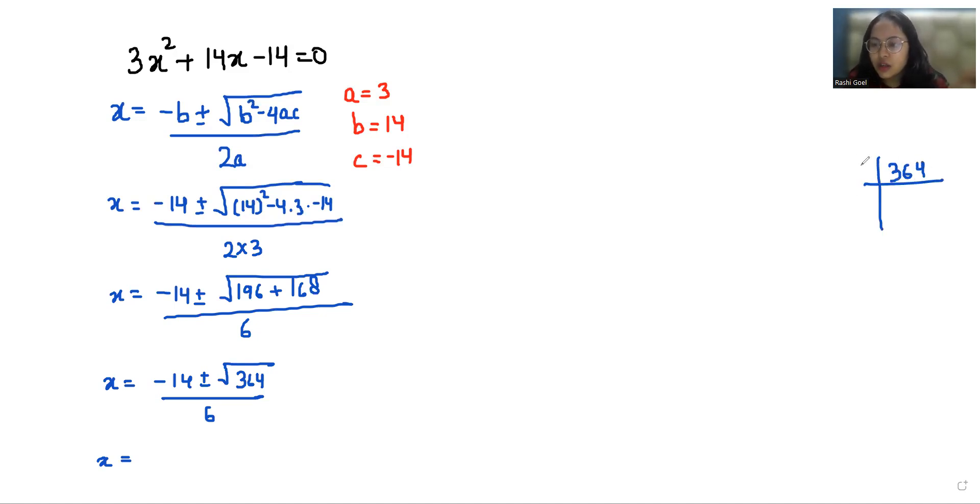If we do prime factorization of 364, when we divide it by 2 it gives us 182. Again with 2 it gives us 91. Then it divides by 7 and then 13. So we can write 2 times 2 times 7 times 13. From there 2 can come out.